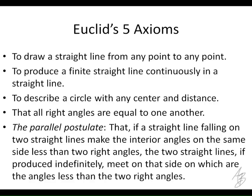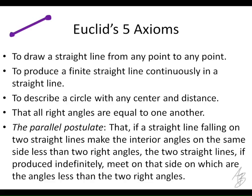Euclid's first axiom: to draw a straight line from any point to any point. What he means is if you have two points, you can draw a line segment between them. The idea of it being a straight line is important — without that constraint, you could draw many curved paths between two points. So axiom one: given two points, you can draw a unique line segment.